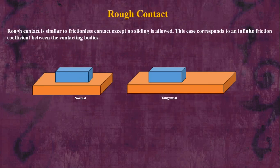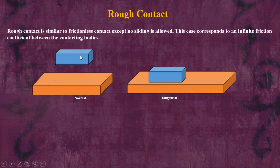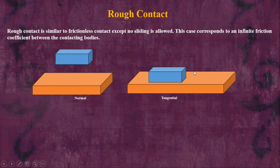Now let's talk about another type of non-linear contact — rough contact. Rough contact is similar to frictionless contact except no sliding is allowed; the body will not slide against another body. This corresponds to an infinite coefficient of friction case, where the body is free to separate but there is no sliding.